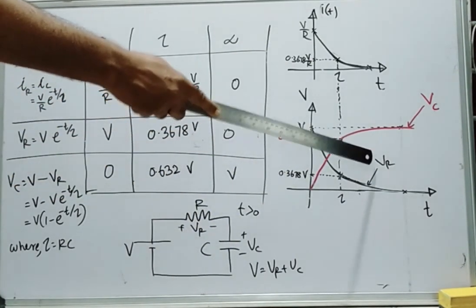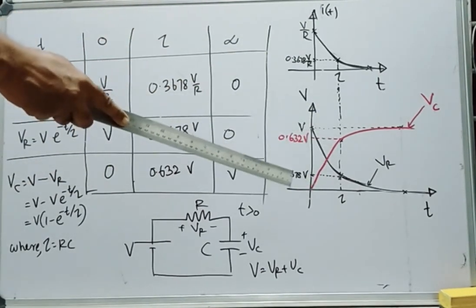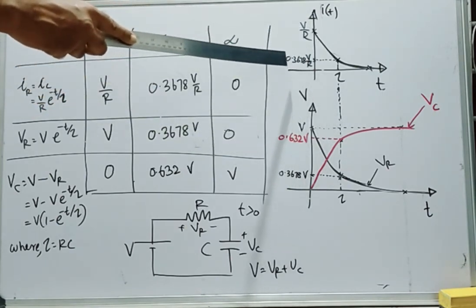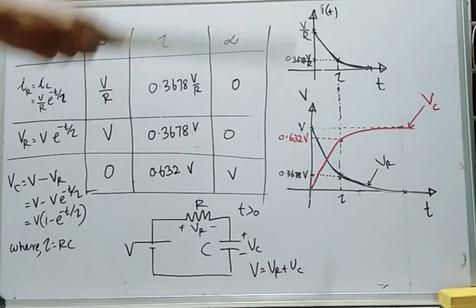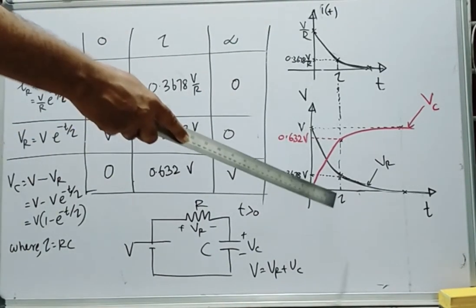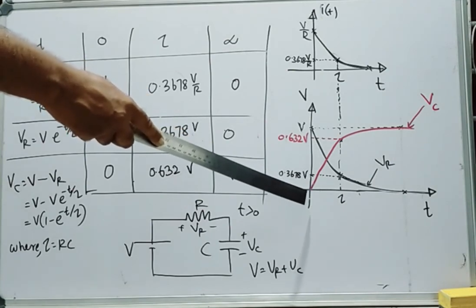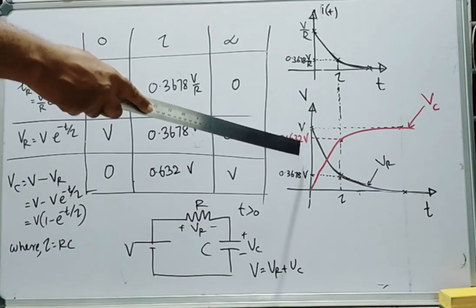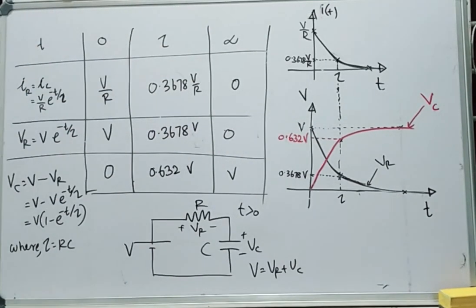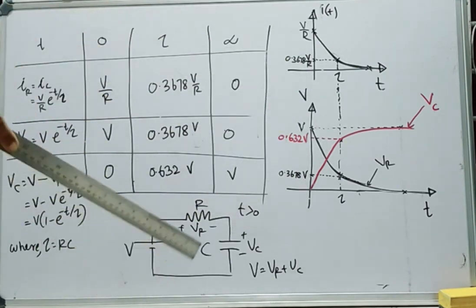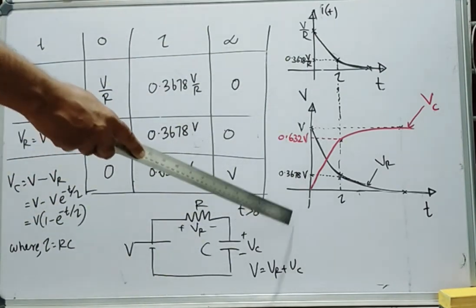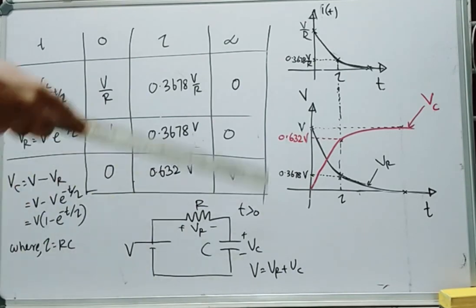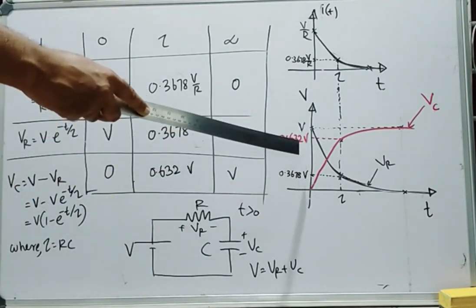From these curves, it is clear that corresponding to the time constant, the current decays to 0.3678 times the initial current, and the capacitor voltage increases to 0.632 times the final steady state value. In both ways, we can define the time constant in this circuit. We can define the time constant as the time required to rise the capacitor voltage to 63.2% of its final value.